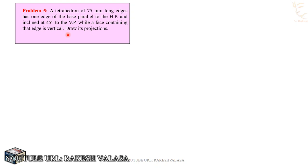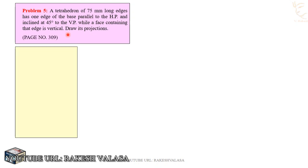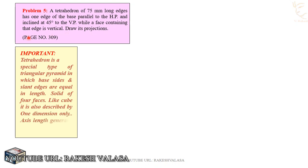First, you need to identify the given solid. Here the given solid name is tetrahedron. We know that this is a special type of pyramid — a special type of triangular pyramid in which all sides and slant edges are equal in length. He has given that the edge length or slant edge length is 75mm. This tetrahedron has 4 equilateral triangle faces, like a cube having 6 equal square faces. It is described by one dimension only, that is the edge length of 75mm. Axis length is generally not given.